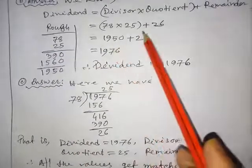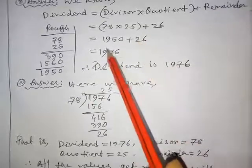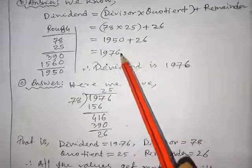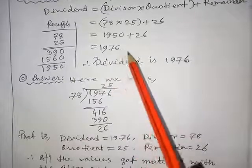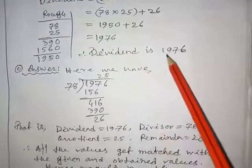Put the value here and add with the remainder 26. Then you will get 1976. So, the dividend is 1976.